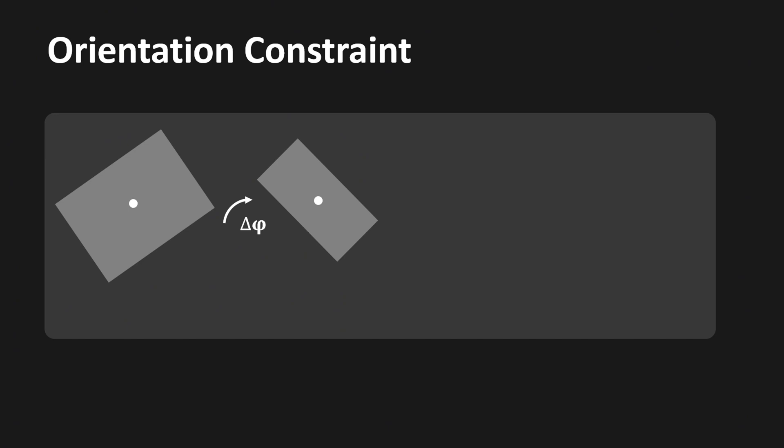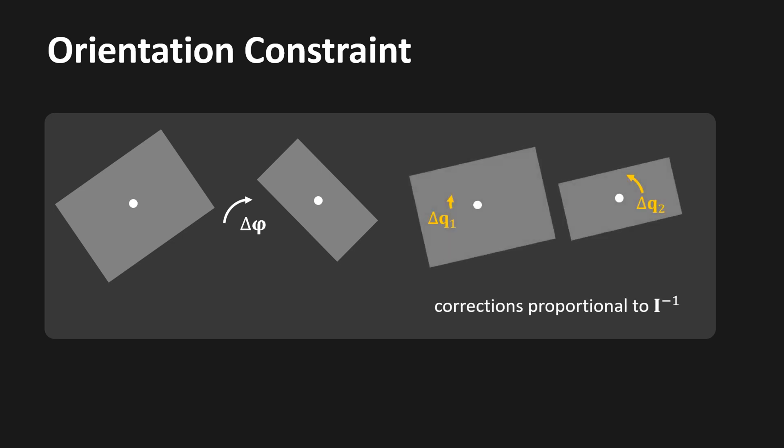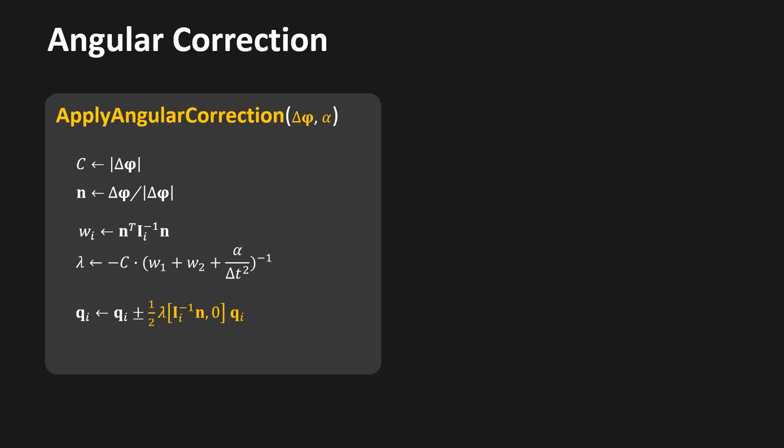The second basic constraint we need is the orientation constraint. Here we want to fix the relative orientations of the bodies — in this particular example, we want the two bodies to be aligned. We can compute an orientation correction delta phi to achieve this; the correction is split between the two bodies relative to their inverse inertias. Here you see the procedure to apply an angular correction delta phi. It is simpler than the linear version — we don't need the positions of the attachment points, and only the orientations q of the two bodies are modified. The torque acting on the constraint is lambda times n divided by delta t squared.